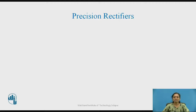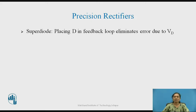What are precision rectifiers and what is the need for them? Due to the voltage drop across the diode, we cannot get the characteristics of an ideal diode. The drop across a conducting diode is 0.7 volt. But when we connect the diode in the feedback path of the op-amp (operational amplifier), we can get the diode acting as an ideal diode. These characteristics are called a super diode.